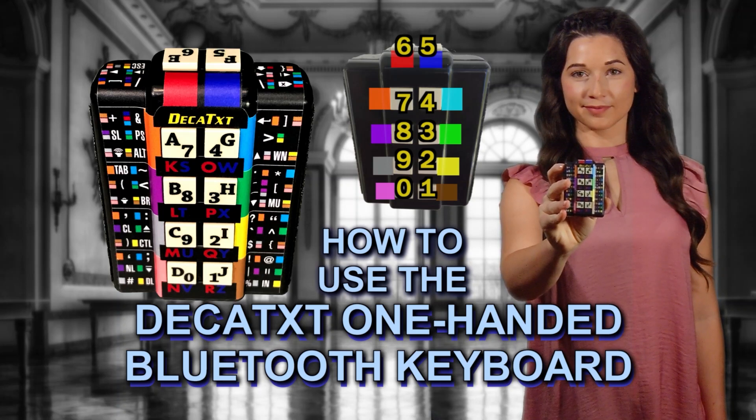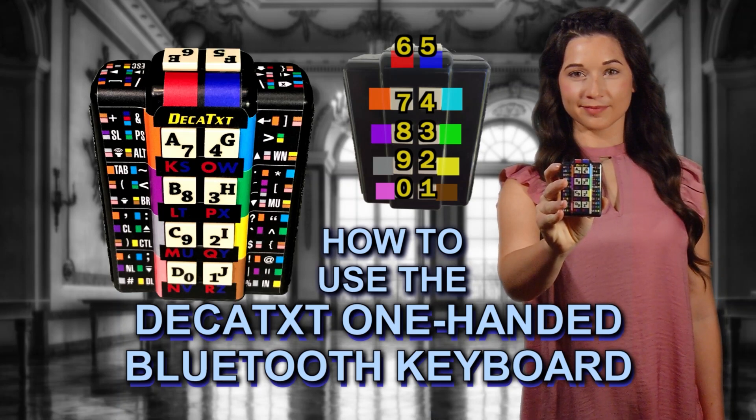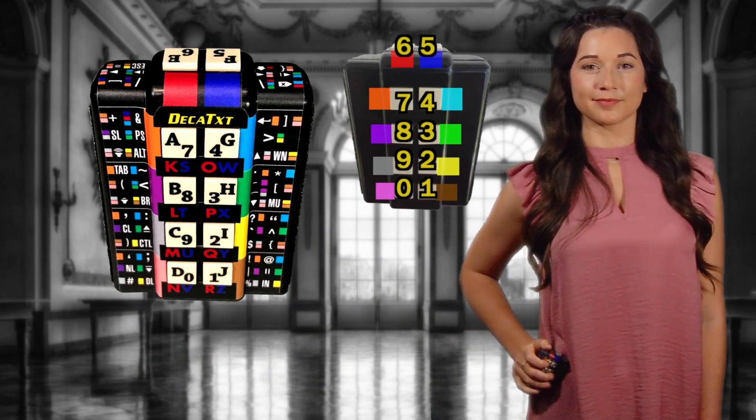Place the Decatext keyboard in either hand, with one edge just beneath your fingers and the other edge against your side to touch type.